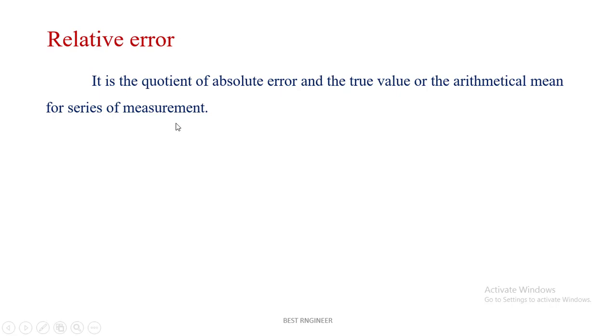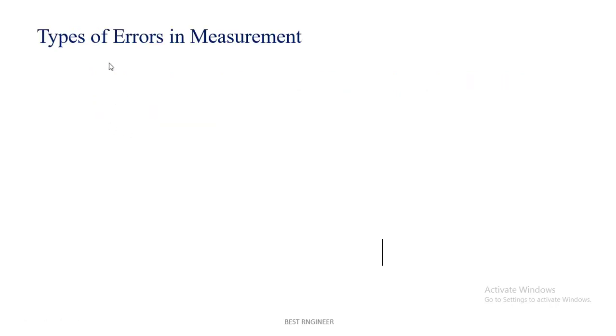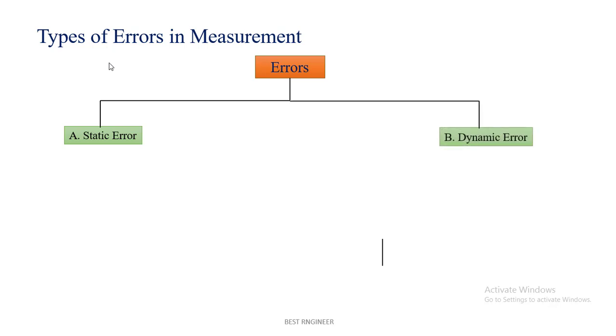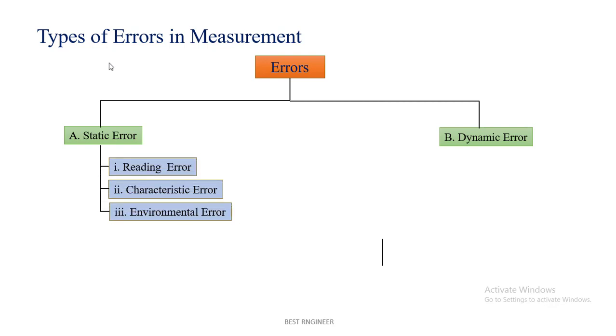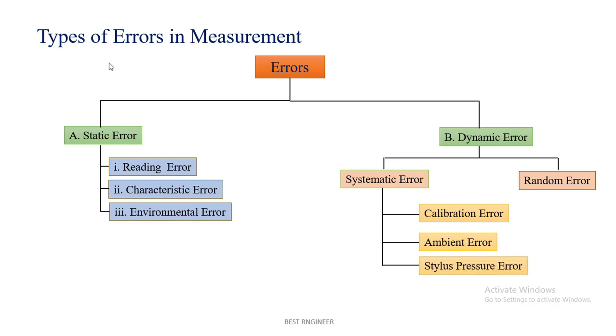Let me see the types of errors in measurements. Errors are classified into two major categories: first one is static error, second is dynamic error. Then the static error is classified into reading error, characteristic error, and environmental error. This dynamic error is classified into two categories: systematic error and random error. Then the systematic error is classified into calibration error, ambient error, stylus pressure error, avoidable error, and instrumental loading error. These are the types of errors in measurements.